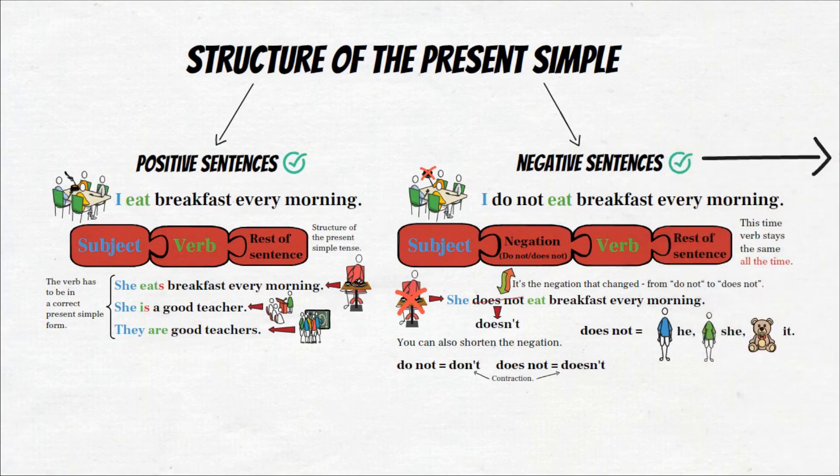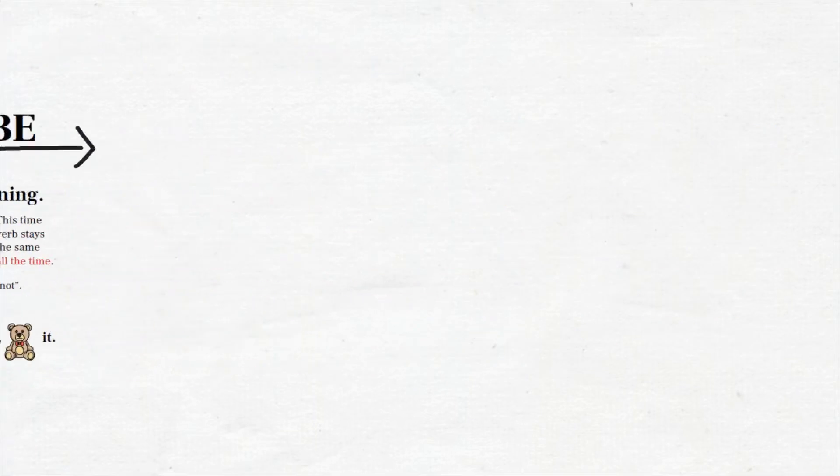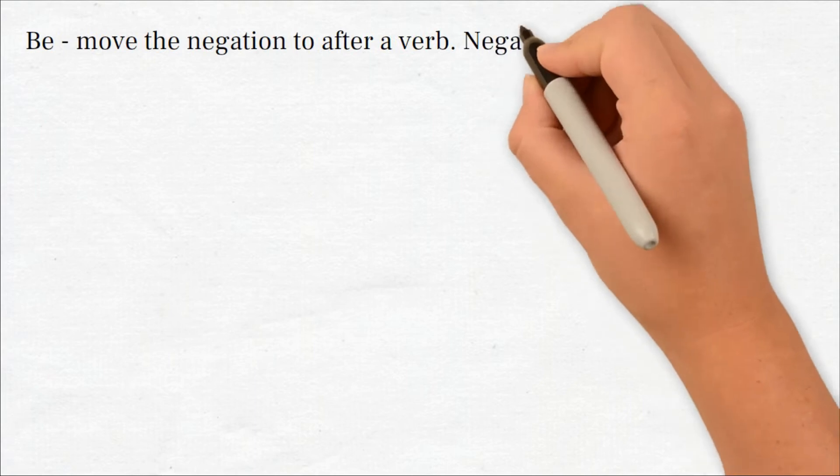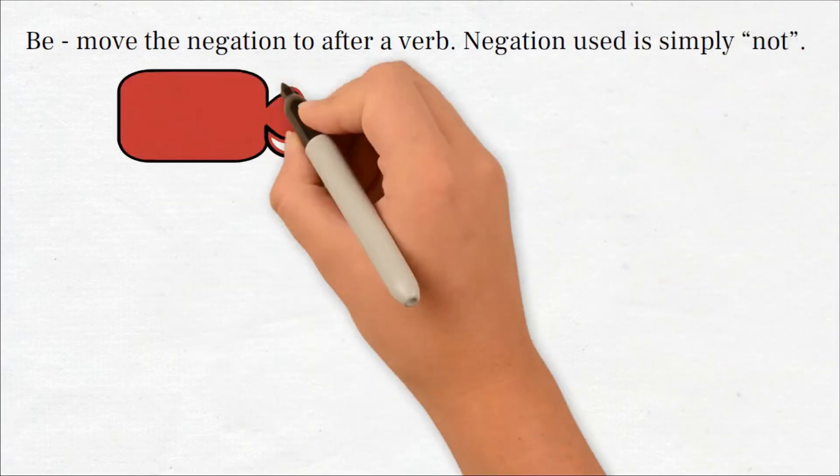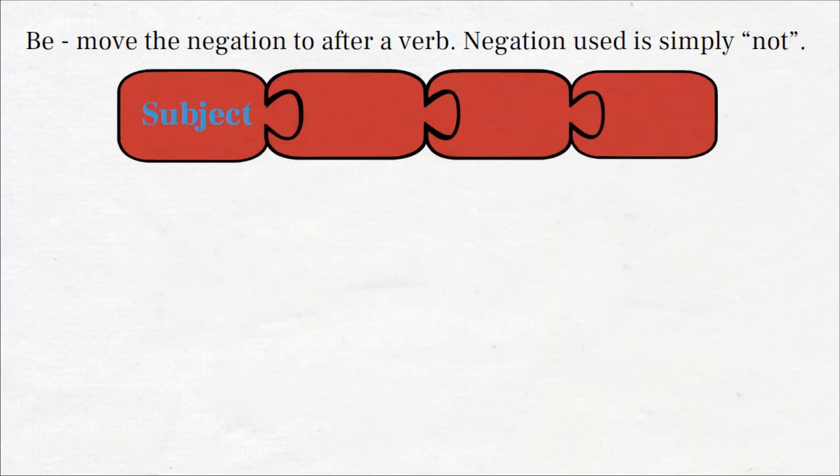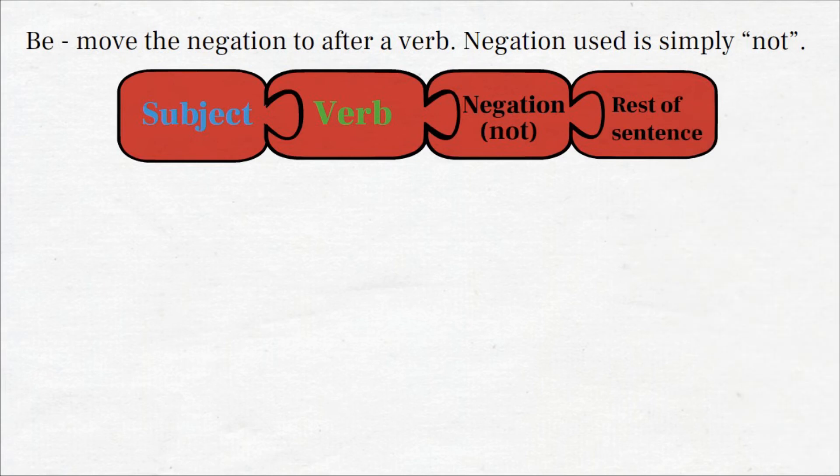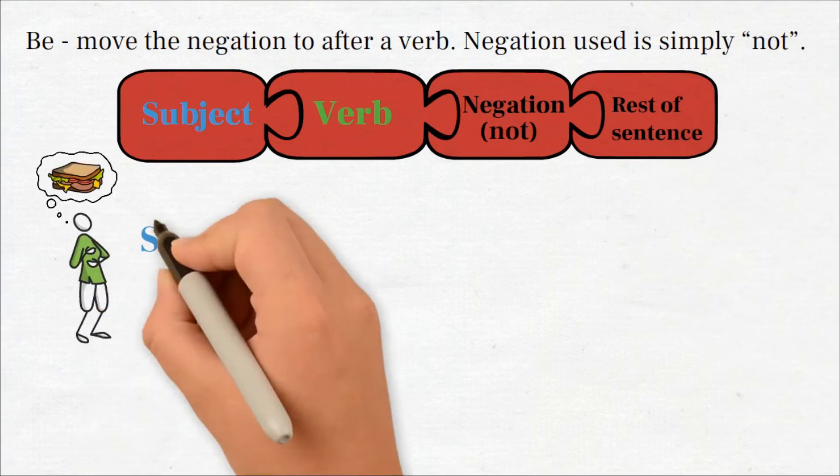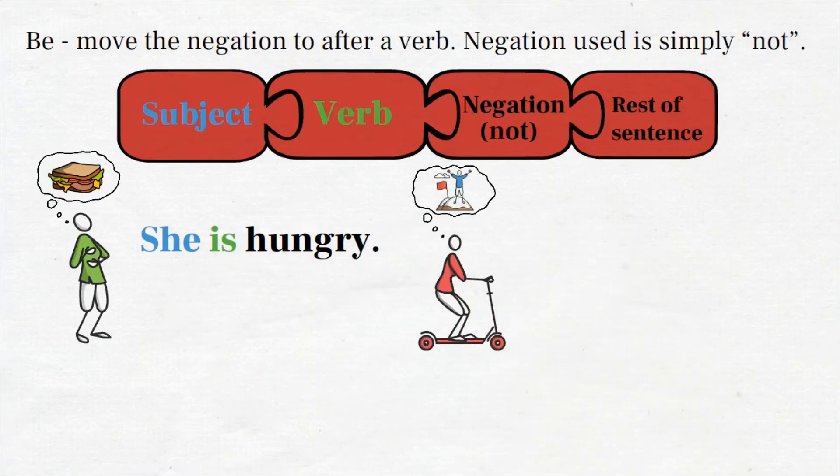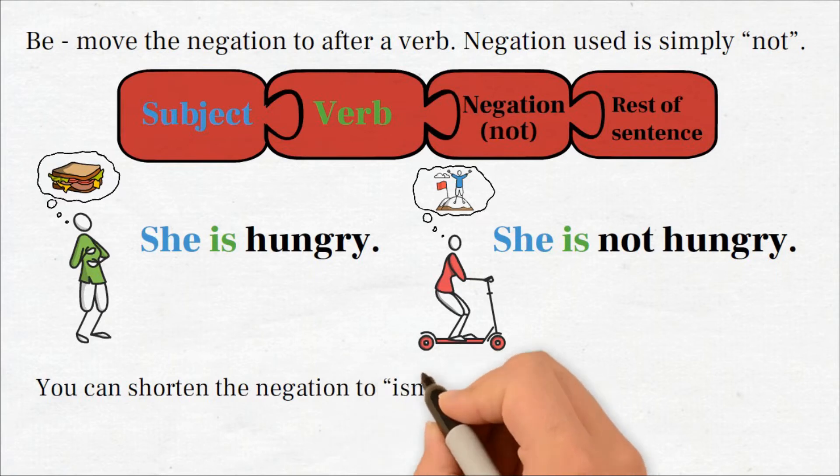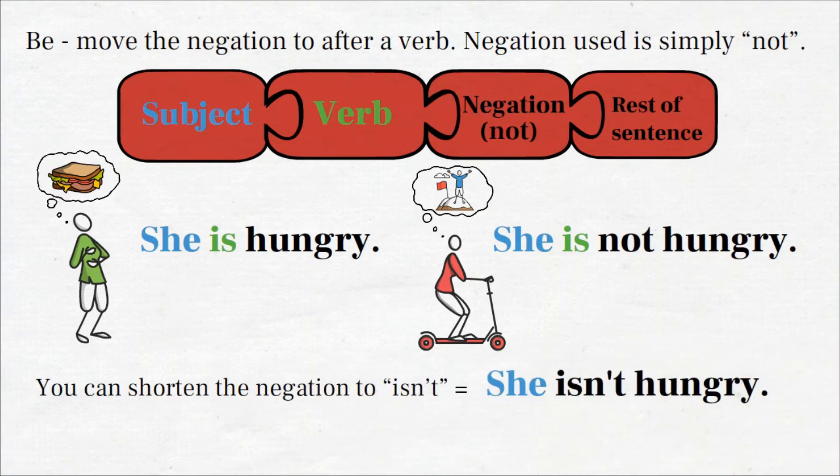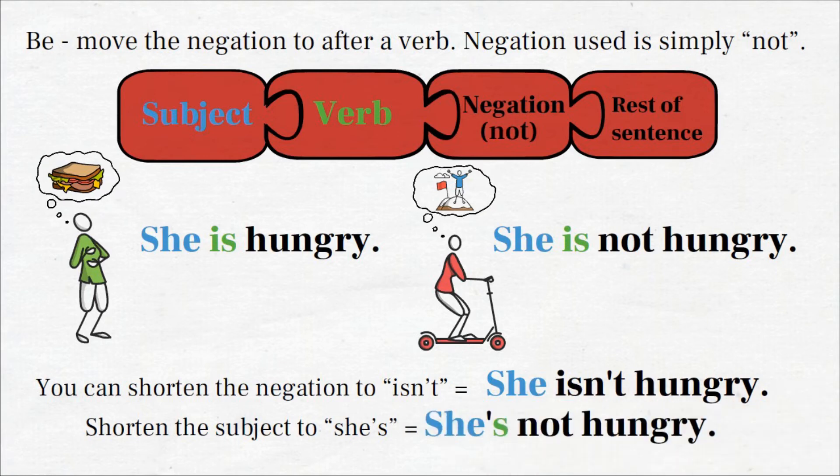We use does not with the subject he, she, and it. You can also shorten the negation: do not can become don't, and does not can become doesn't. It's called a contraction. She doesn't eat breakfast every morning. However, when we form negative sentences with the verb be, we move the negation to after the verb. Note that the negation used is simply not: subject, verb, negation not, and the rest of the sentence. See the difference here: she is hungry, and she is not hungry.